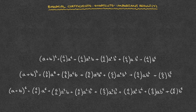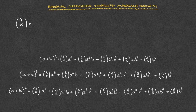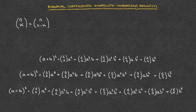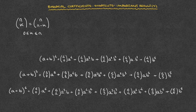The result we learn about here is the following: the binomial coefficient n choose k is equal to the binomial coefficient n choose n minus k, where k is a positive integer between 0 and n. I'll go ahead and box that result.